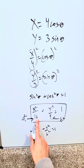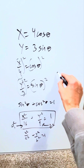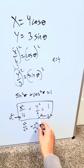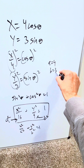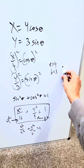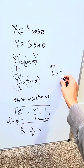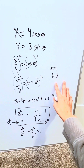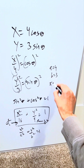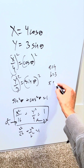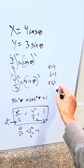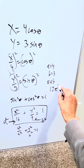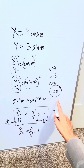Based on this, a is equal to 4. Based on this value, b is equal to 3, because you had a 16 and a 9 and you're looking at their roots. The area of an ellipse is equal to pi times a times b — 4 times 3 times pi — so 12 pi is your end result.